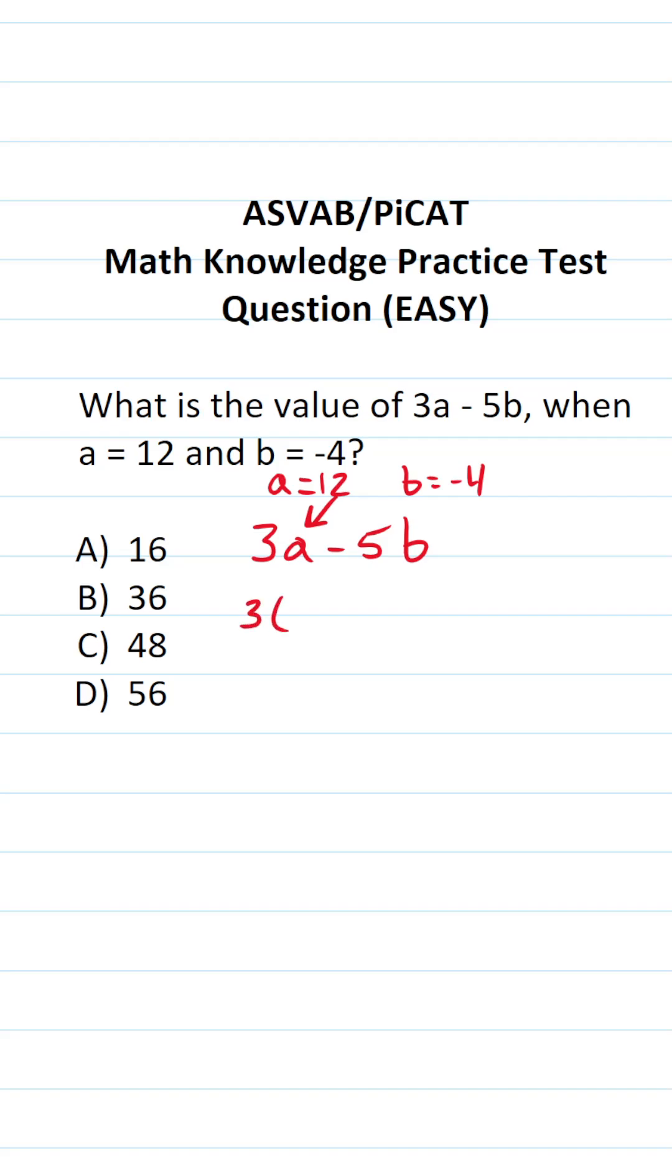This becomes 3 times 12 minus 5 times negative 4. 3 times 12 is 36. Again, if you can't do that math mentally, you can always do it off to the side, especially on test day. 2 times 3 is 6, 3 times 1 is 3.